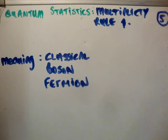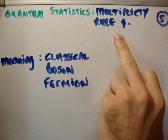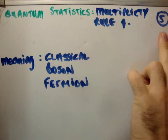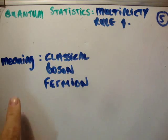In this video, I'm going to continue my tutorial videos on quantum statistics, and we're going to begin by discussing the multiplicity rules, and this is multiplicity rule number one. This is tutorial video number five in this lecture series, and the previous video was the meaning of classical particles, bosons, and fermions.